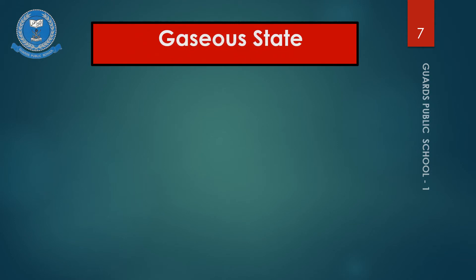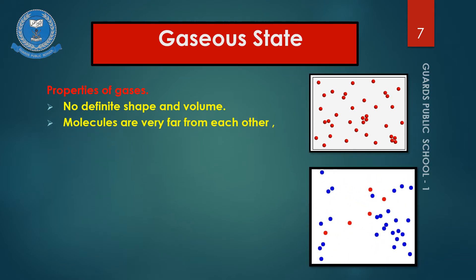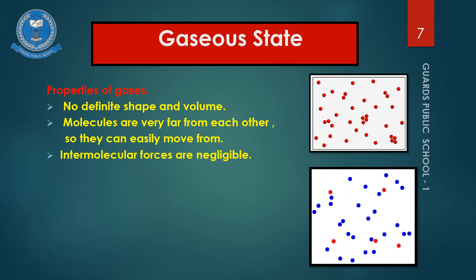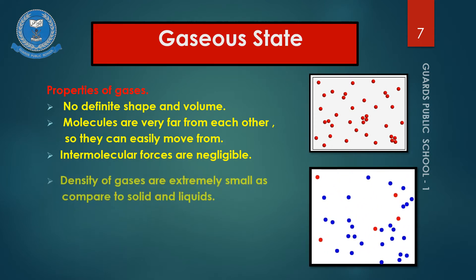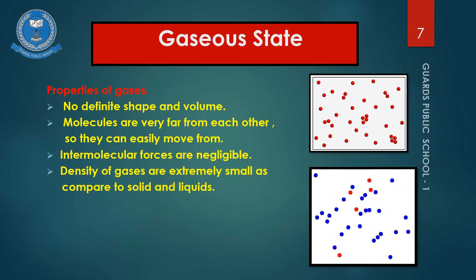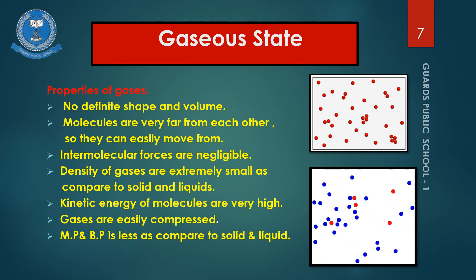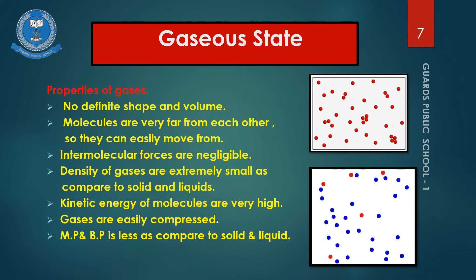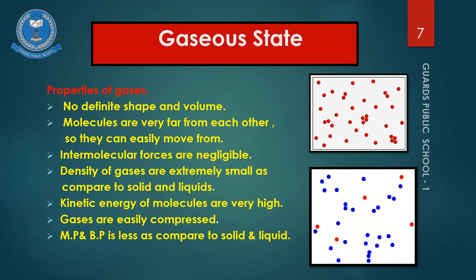Properties of gases: Gases have no definite shape or volume because molecules are very far from each other and can move freely from one place to another. Intermolecular forces are negligible due to very large distances. Density of gases is extremely small compared to solids and liquids. Kinetic energy of gas molecules is very high because they have much space to move. Gases are easily compressed because of the large spaces between molecules. Melting and boiling points of gases are lower than solids and liquids.